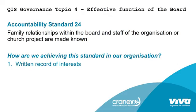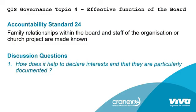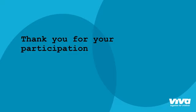Standard 24: family relationships within the board and staff of the organization or church project are made known. There should be a written record of interests. The discussion question is: how does it help to declare interests and ensure that they are particularly documented? Thank you very much, and we look forward to an eventful discussion in the webinar.